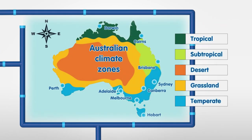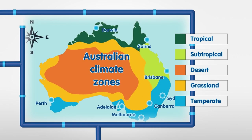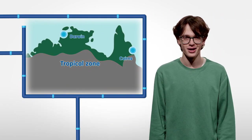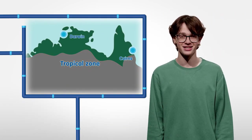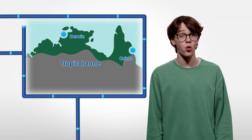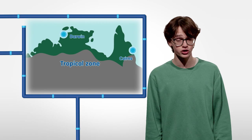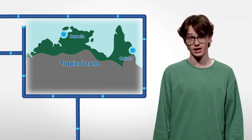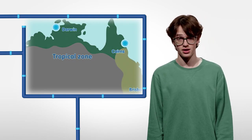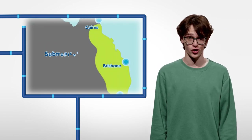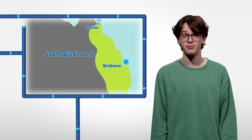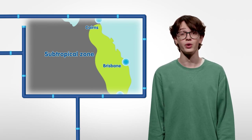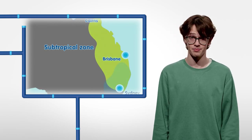Let's check out the Australian climate zones. Tropical zone — places like Cairns and Darwin. They're warm and humid for most of the year because they're closest to the equator. Subtropical zone — places like Brisbane. Summers are hot and winters are mild.